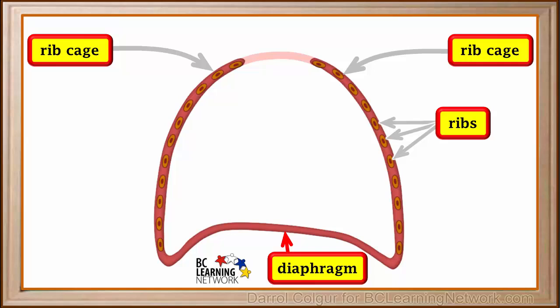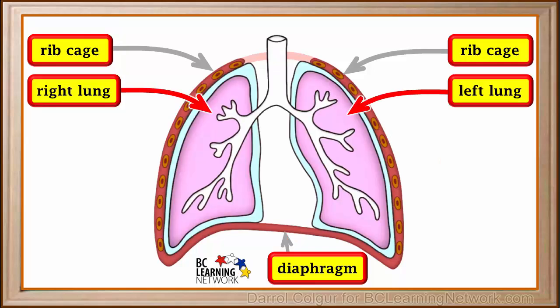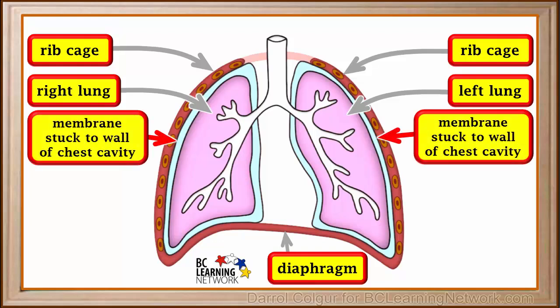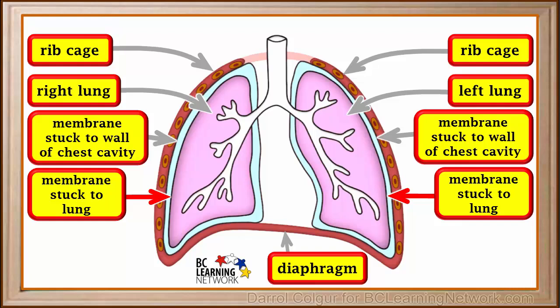Now we'll have a look at what's inside the chest cavity. The lungs take up most of the space in the chest cavity — we are showing them here as pink. There are two strong thin membranes around each lung, shown here as black lines. The outer membrane is stuck to the inside of the wall of the chest cavity, and the inner membrane is stuck to the outside surface of the lung. These strong membranes protect the lungs and the chest cavity wall as the lungs move.